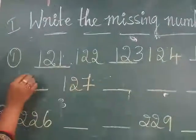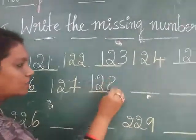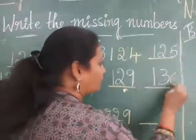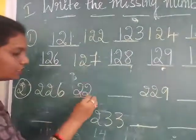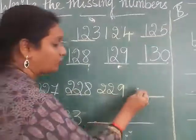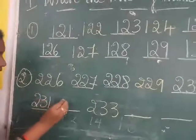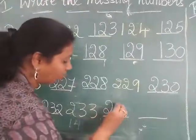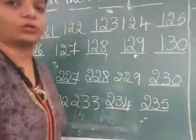125, after 125 comes 126, 127, 128, 129, 130. The next one: 226, 227, 228, 229, 230, 231, 232, 233, 234, 235. Questions 3 and 4, do by yourself.